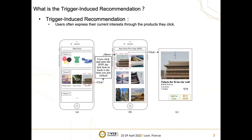However, users sometimes may intend to actively access more related items with the item they just clicked. For example, in our online scenario app Alipay, multiple cards with each three recommended items are displayed first, as shown in Figure 1A. Then, once an item is clicked, a new page called Item Feed Flow Page, IFFP, will be triggered and displayed as shown in Figure 1B.